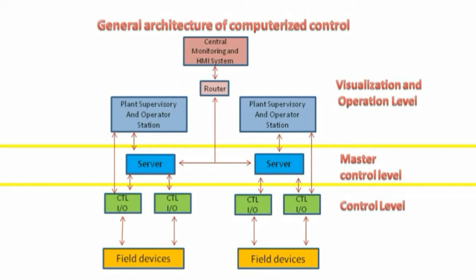Let's start explaining the architecture of the computerized control and the distributed control system. We start at a high level and as we go through the slides, we will go to more detailed explanation. At field level, we have the field devices such as pressure, temperature, and level sensors, feeding the signals through the input-output modules and the DCS controllers. The controllers will take the appropriate control action and feed the output to the final control elements.